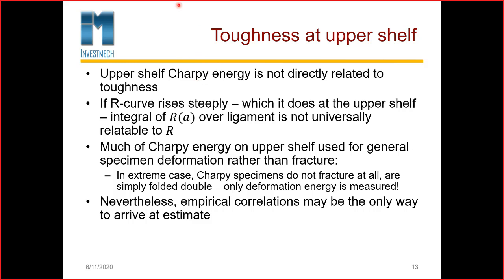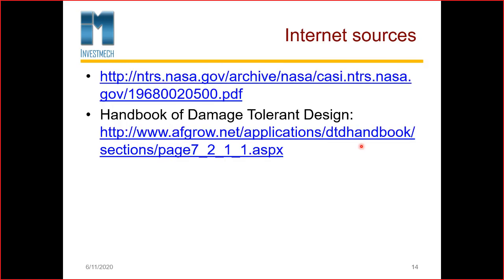At the upper shelf, Charpy energy is not directly related to toughness. If the R curve (the energy release rate curve) rises steeply, as it does at the upper shelf, the integral of R over the ligament is not universally relatable to R. Much of the Charpy energy on the upper shelf is used for general specimen deformation rather than fracture. Nevertheless, empirical correlations are available. For very valuable additional information on fracture toughness of materials, go and download the relevant document from NASA — there is a lot of valuable information in that document.